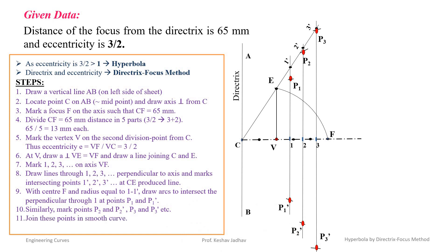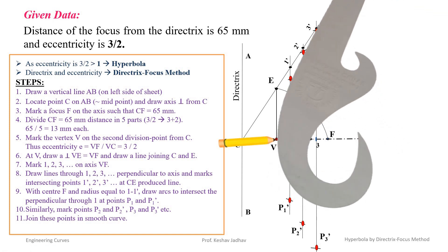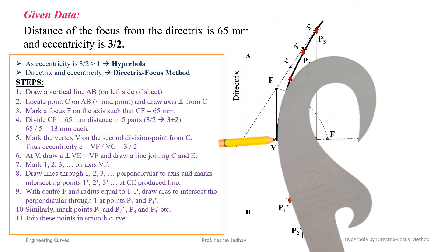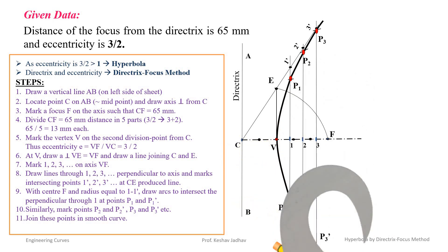In this way we get a number of points, and if we join them passing through the vertex we will get the hyperbolic curve. We can join these points freehand or use a French curve. Rotate the French curve and match the maximum number of points with its arc, then draw a smooth curve to complete the hyperbola by the directrix focus method.